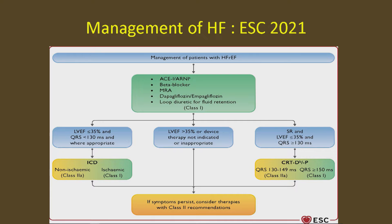If the patient is in sinus rhythm, ejection fraction is less than 35%, and QRS duration is more than 130 milliseconds, device therapy is indicated — CRT-P or CRT-D. This is today's topic: if the patient has heart failure, QRS duration more than 130 milliseconds, sinus rhythm, and ejection fraction less than 35% after optimal medical therapy, this patient needs CRT-P or CRT-D.